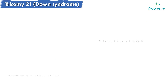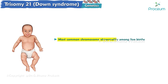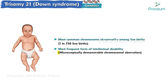Trisomy 21 — Down syndrome genetics. Trisomy 21, Down syndrome, is the most common chromosome abnormality among live births, occurring in 1 in 730 live births, and is the most frequent form of intellectual disability caused by a microscopically demonstrable chromosomal aberration.